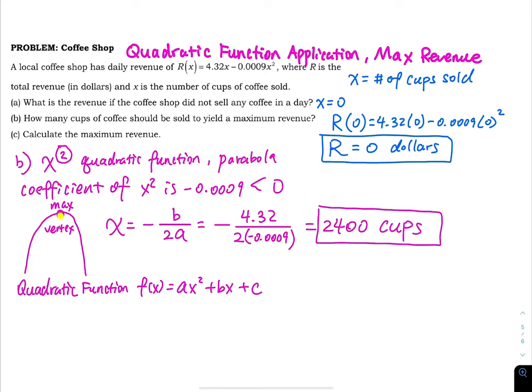When x equals 2,400, your revenue is maximized. Not one more, not one less. That many cups to maximize revenue. That is your mission - you would like to sell that many cups of coffee in a day.